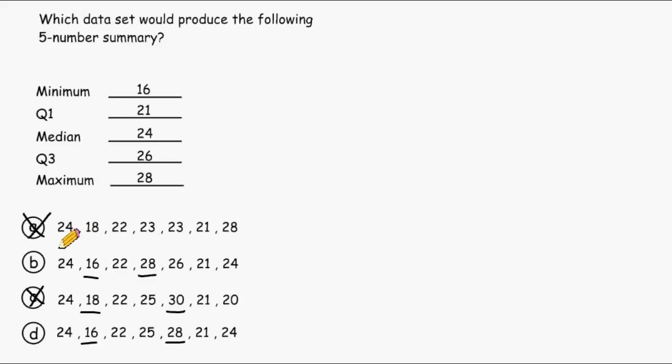Let's take data set B and place that data in order from least to greatest. Of course the minimum of that data set is 16. After that we have 21, and after 21 we have 22. After 22 we have two 24s, and after 24 we have a 26, and of course our maximum of 28.